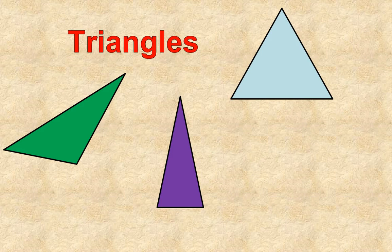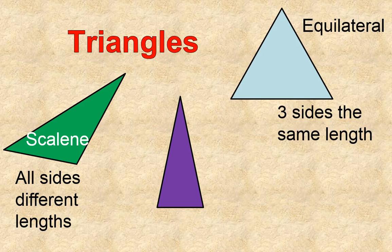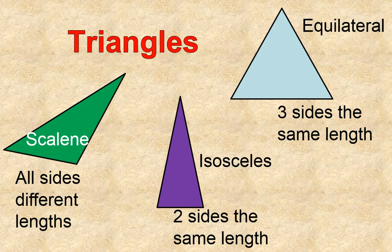The other way that we classify triangles is by the length of the sides. This green triangle has three different sides, and they are all different lengths, so that's what we call a scalene triangle. The blue triangle here is an equilateral triangle. Equilateral triangles have three sides that are the same length. And the third type of triangle, the purple one in the middle, is called isosceles, and it is called isosceles when two of the sides of the triangle are the same length.